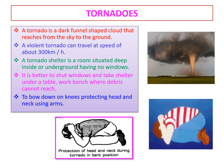Tornadoes may also form within cyclones. The diameter of a tornado can be as small as a meter and as large as a kilometer or even wider. The funnel of a tornado sucks dust, debris, and everything near it at the base, and throws it all out near the top.